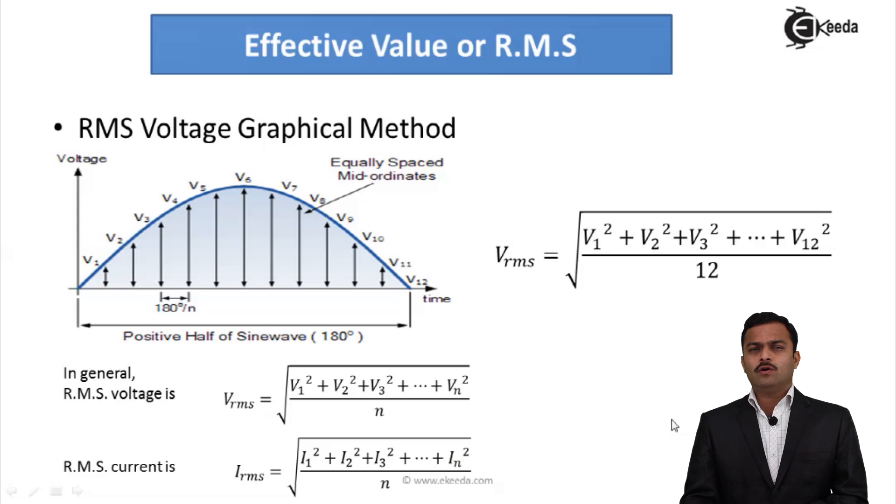So in the graphical way, what we do? We split the waveform into number of instances and for every instant we get the instantaneous value and square it. Likewise, we take addition of all the squaring of all the instantaneous values divided by number of instances we considered, and then ultimately we take the root. We will get the RMS value by graphical method.